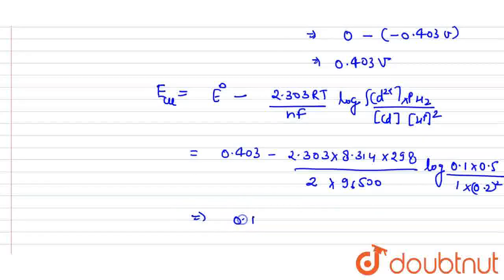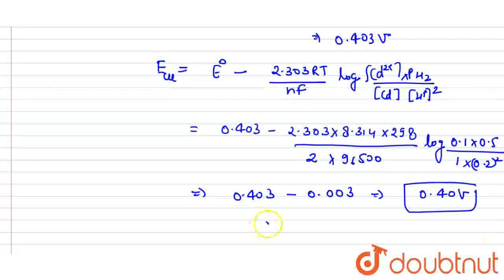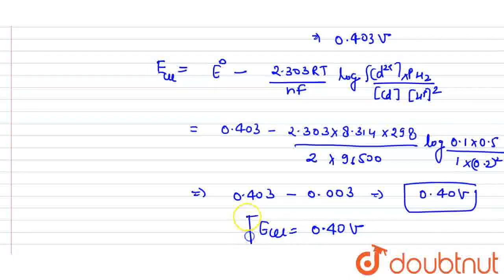How much will it be? It will be 0.403. This part is 0.003. The value of E cell is 0.40V. Finally E cell value is 0.40V. This is our answer.